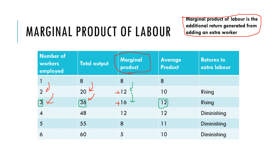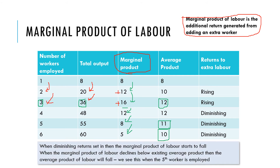Once we add the fourth worker, they add 12 — not as much as the previous 16, so returns are diminishing. Adding the fifth person brings the marginal product down to 8, and the sixth down to 5. At some point, adding the fifth and sixth workers starts to bring down the average product — the amount produced per person decreases. When the marginal product drops below the current average, the average product of labor will start to fall, which we see occurring when we add the fifth and sixth worker in our example.